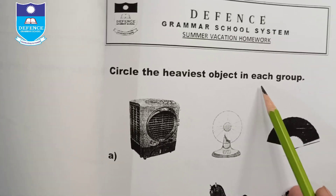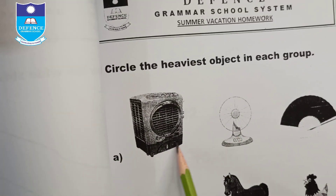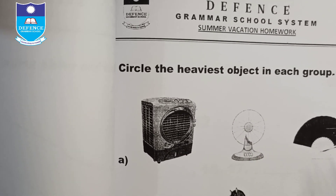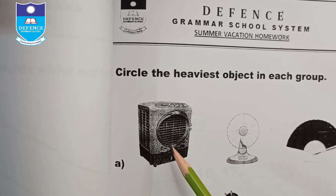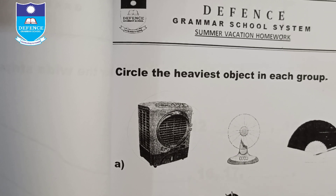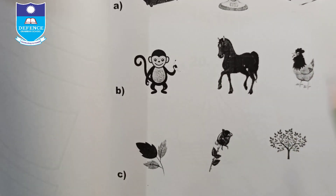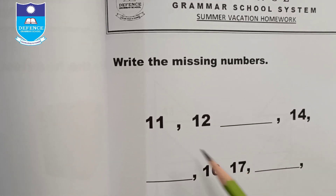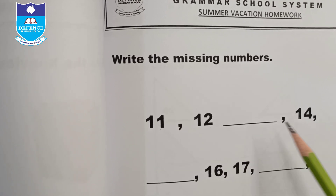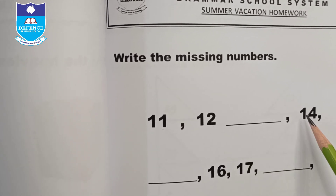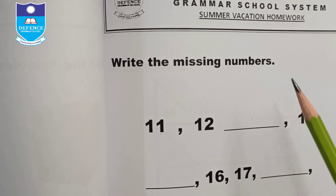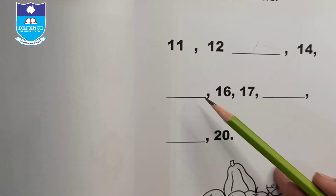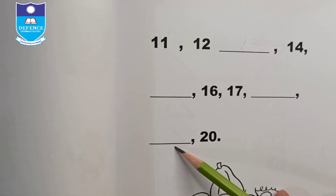Circle the heaviest object in each group. For example, among an air cooler, air fan, and a geometric object, the air cooler is heaviest — circle it. Write the missing numbers: for example, in the sequence 11, 12, _, 14, write 13. Find what comes before 16, after 17, and before 20.